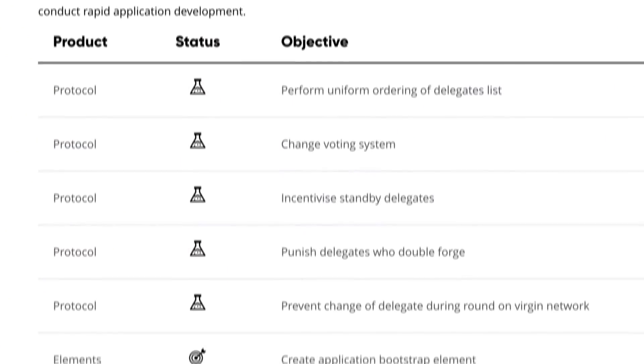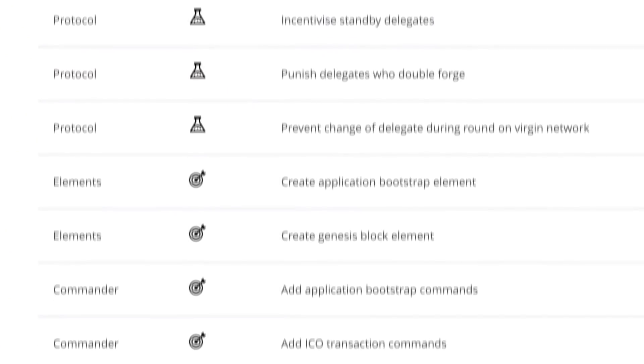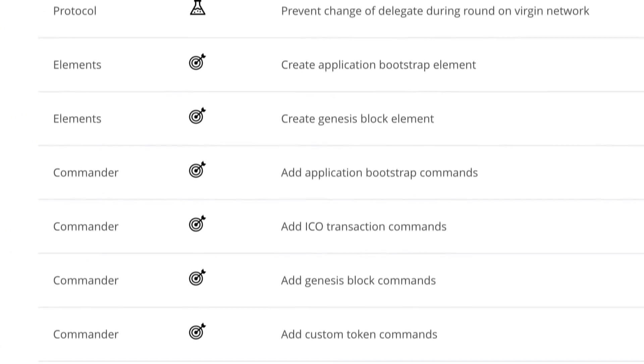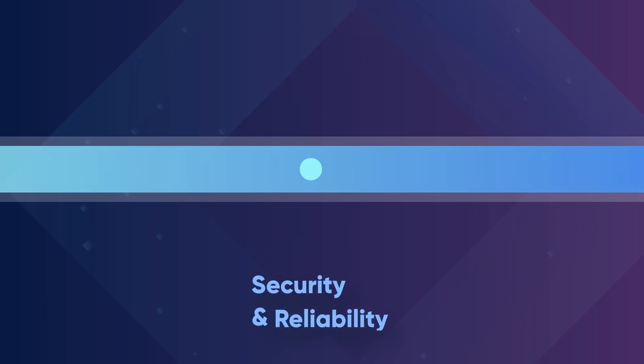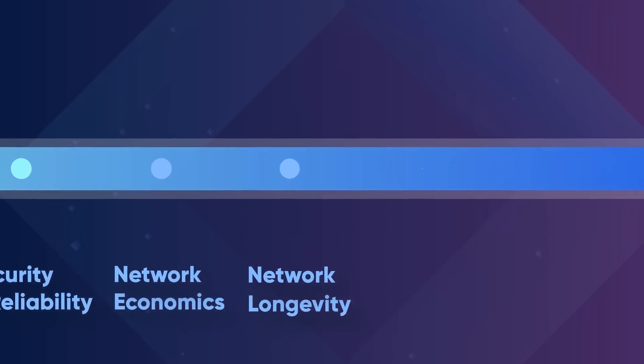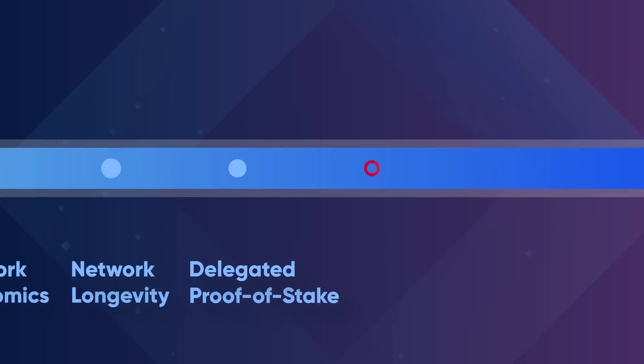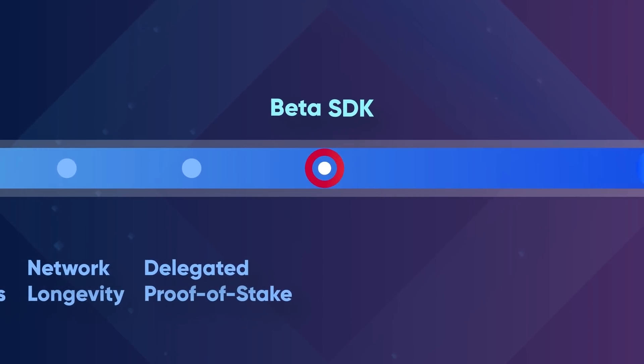Delegated proof-of-stake implements numerous improvements to our consensus mechanism, changing how votes are placed and weighted and giving incentives to standby delegates on the network. After completion of this phase, we will enter the beta SDK stage, where developers will be able to conduct rapid application development.